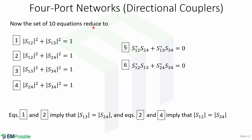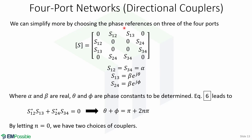With these conditions, the set of 10 equations reduces to 6. Equations 1 and 2 imply that the magnitude of S13 equals the magnitude of S24, and equations 2 and 4 imply that the magnitude of S12 equals the magnitude of S34. We can simplify further by choosing phase references on three of the four ports. Given this scattering matrix, we define S12 equals S34 equal to alpha, S13 equal to beta times e to the j-theta, and S24 equal to beta times e to the j-phi, where alpha and beta are real and theta and phi are phase constants to be determined.